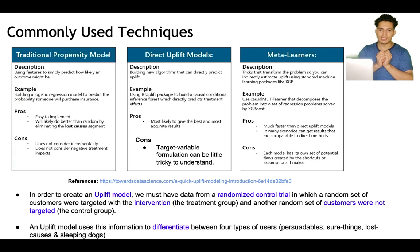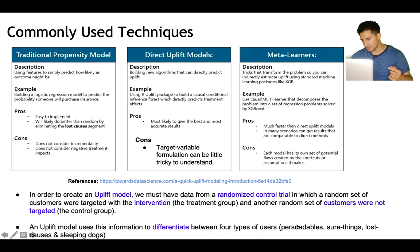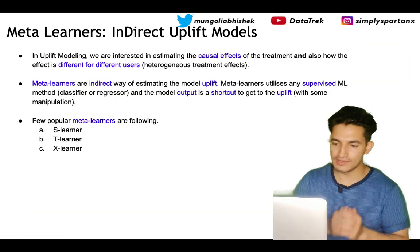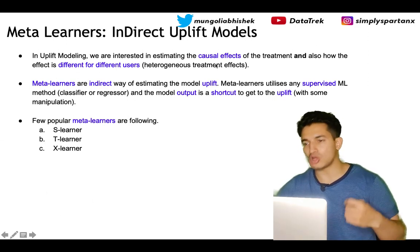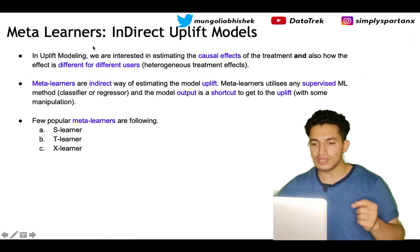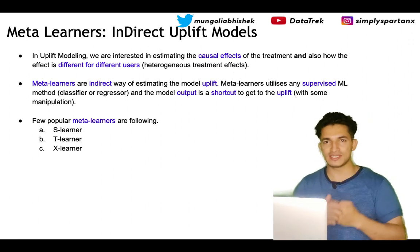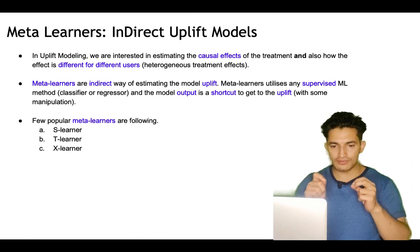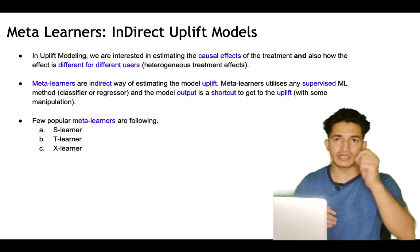An uplift model uses this information to differentiate between the four types of users: persuadables, sure things, lost causes, and sleeping dogs. In uplift modeling we are interested in estimating the causal effect of the treatment and also how the effect is different for different users — that is, the heterogeneous treatment effect. We are trying to detect the causal effect of the treatment and how the effect differs across users.